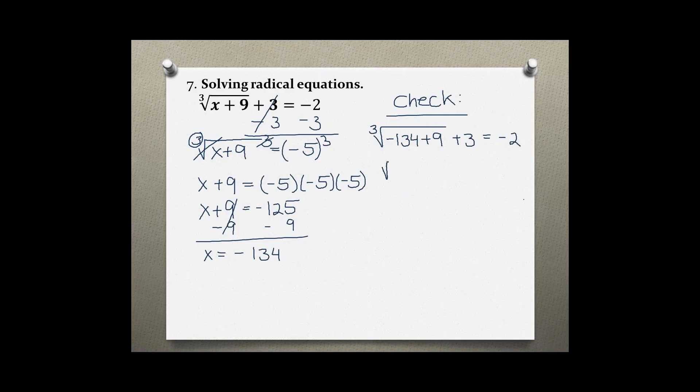So the cube root of negative 134 plus nine gives me negative 125 plus three is equal to negative two. Now taking the cube root of negative 125 gives me negative five plus three equals negative two, and negative five plus three is negative two, which checks. Therefore negative 134 is the solution to this problem.